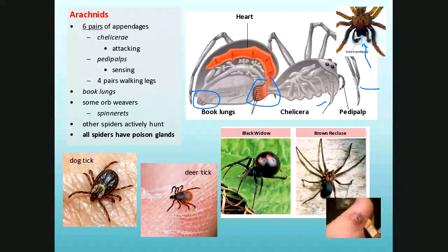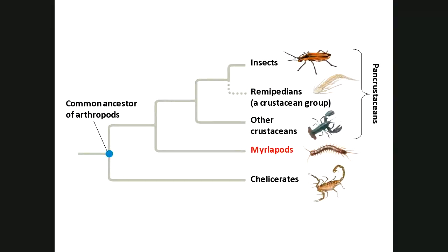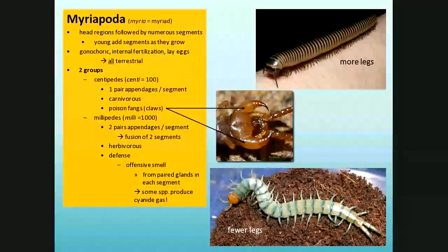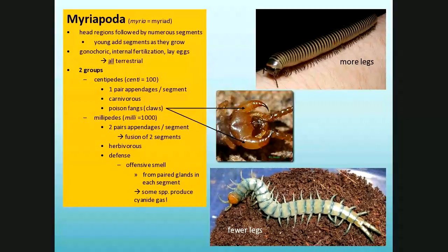Moving off the spiders — now we're talking about the group with lots of feet: myriapods. Myriad means many, pod means feet — these are the centipedes and millipedes. Segmentation in centipedes and millipedes is in a very simple form: segments one after the other. The young actually grow by adding segments. Males and females are terrestrial, so they use internal fertilization and lay eggs. Centipedes have fewer legs — one pair per segment. Millipedes have more legs — two pairs per segment through evolutionary fusion.